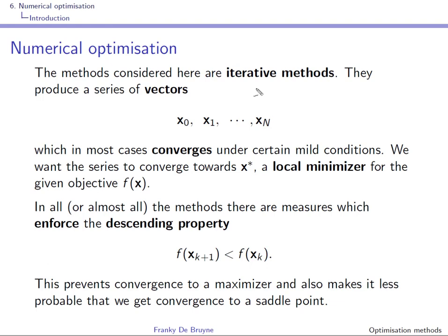The update equation used is: x_{k+1} = x_k + α * d_k. The new vector is constructed from the preceding one plus an update, where α is a step size and d_k is a search direction which is usually dependent on the gradient. So the methods we'll be using are gradient methods.